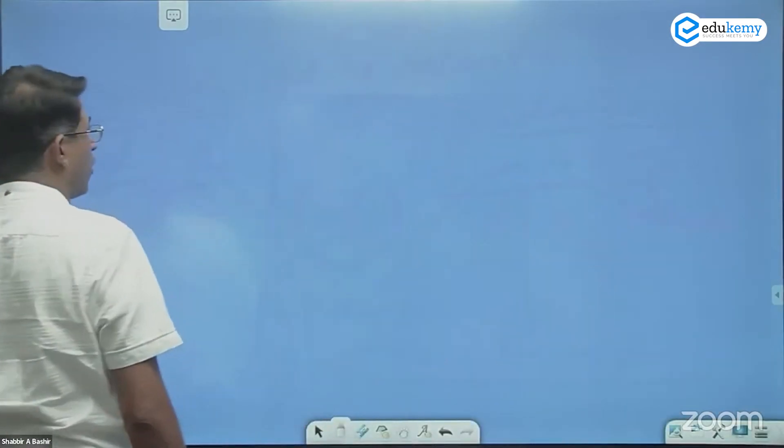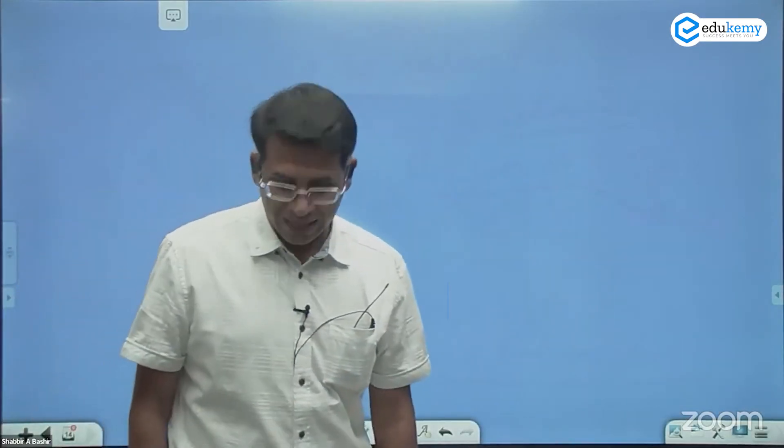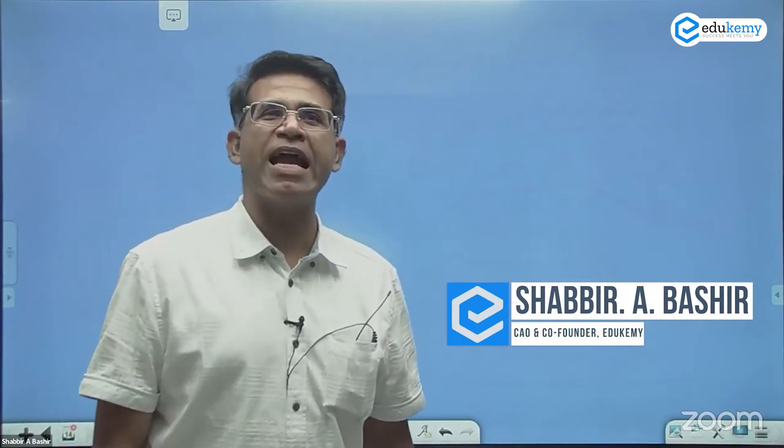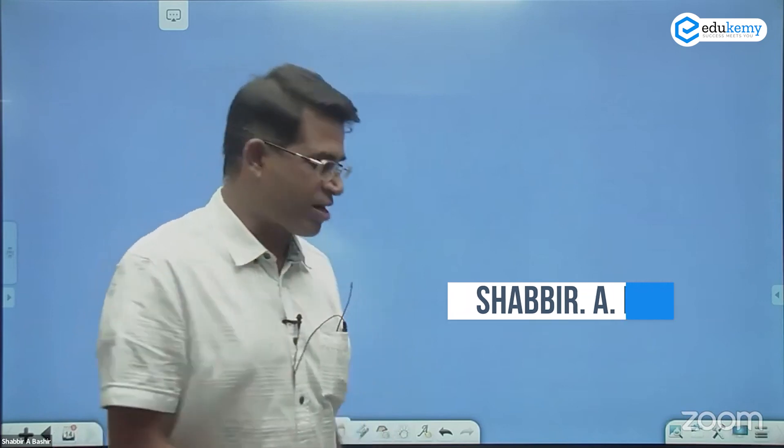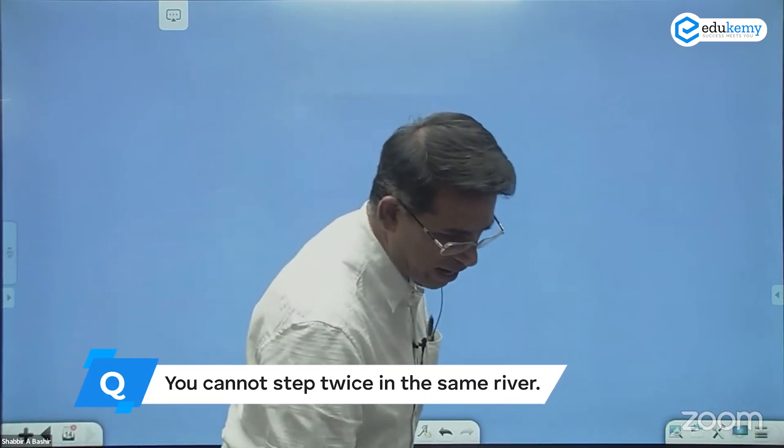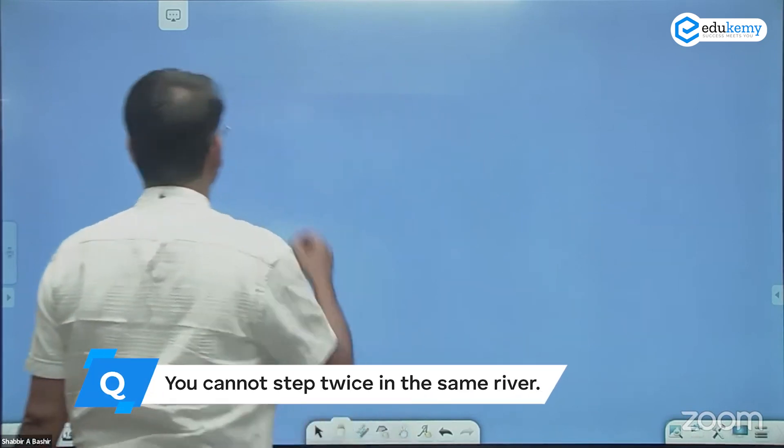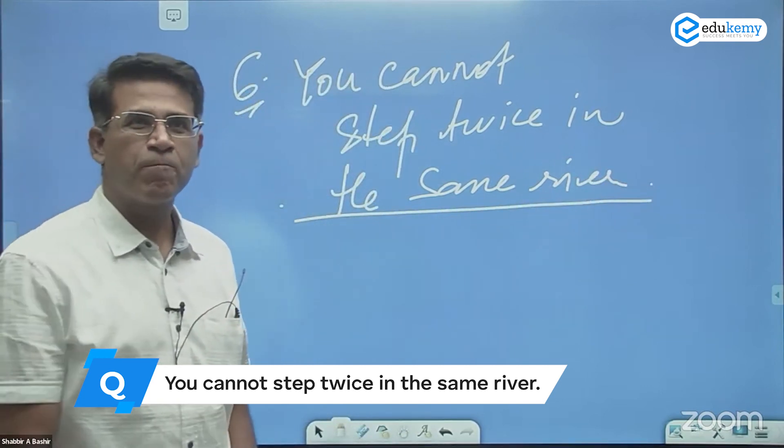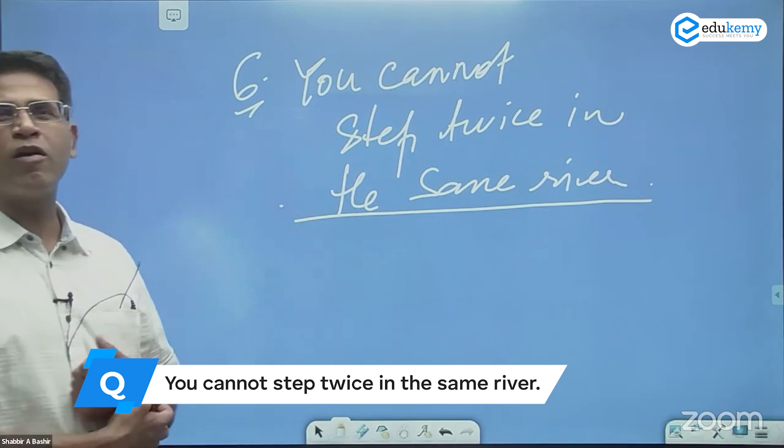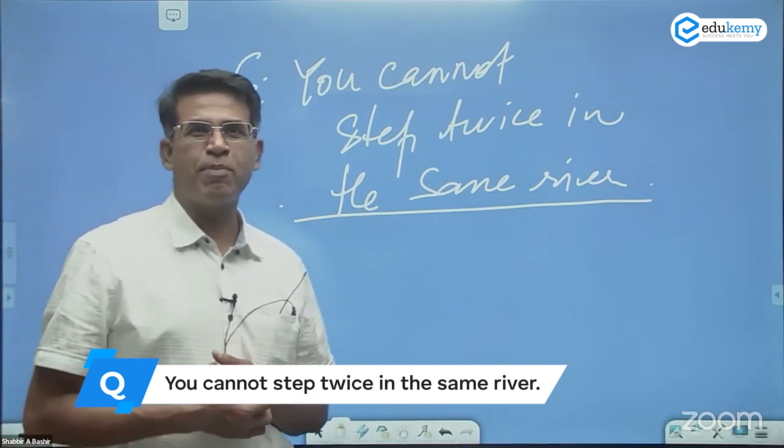This is one of those topics that I think people don't understand and they cannot write either. You cannot step twice in the same river, section B, topic number six. This topic is one of those topics I said belongs to the quadrant number four.